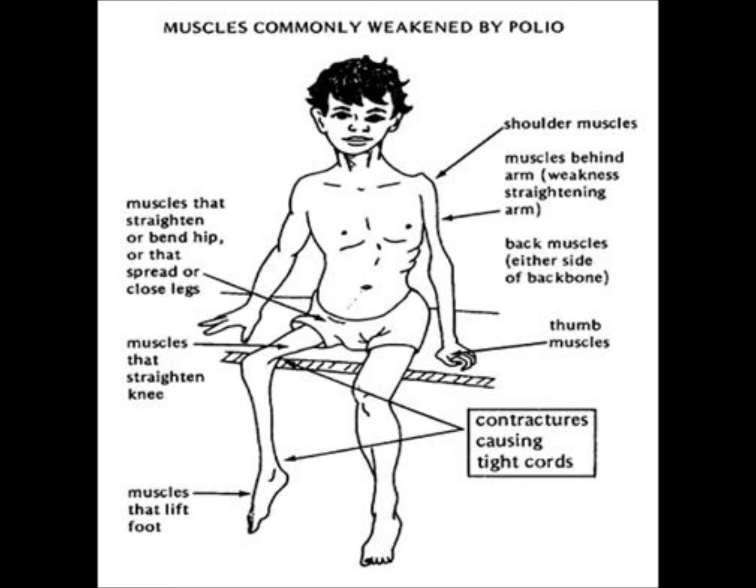When a limb was paralyzed in childhood, the muscle wasted away and the limb did not continue to develop at the same rate as that on the unaffected side, leading to a shriveled arm or leg.